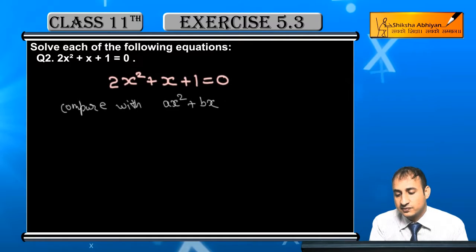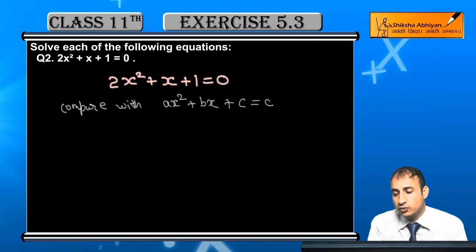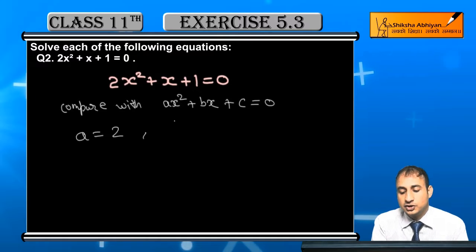Compare with ax² + bx + c = 0. Here we have a value of 2, b value of 1, and c value of 1.